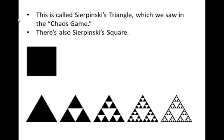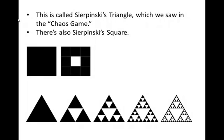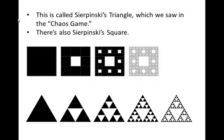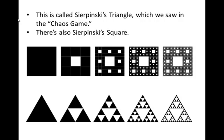It turns out that Sierpinski has other shapes too — he's got a square. Here's the initiator for the square and here's the generator. We chopped the square up into nine pieces and took the middle part out. Now there are eight little small squares around the center, so we can repeat — we can stick the generator in each one of those. Now around each one of those small squares are eight smaller squares, and then again.